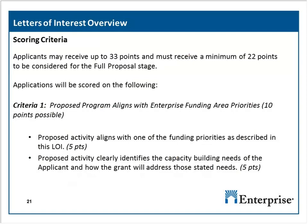The scoring criteria is very similar to last year's LOI, with a new bonus points section added. We're using a 30-point scale with three possible bonus points, and organizations must score at least 22 points to advance to the full proposal stage. Criteria 1 requires your activities to align with one of our funding priorities starting on page 7 of the LOI, and to clearly identify your capacity building needs and show how the grant will address those needs.